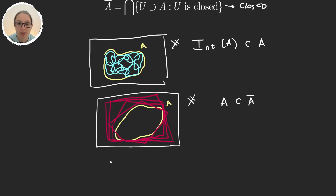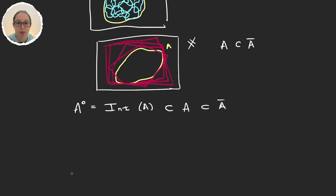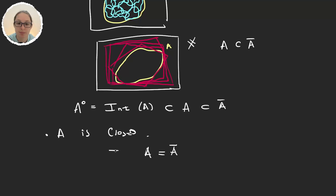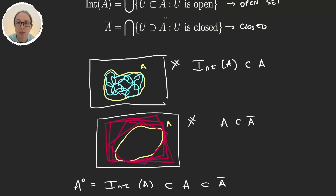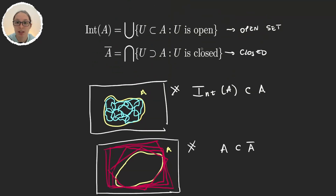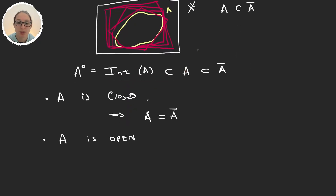So what we have is that the interior — which can also be written as A with a zero — is a subset of A, and A is a subset of the closure. When A is closed, A will be part of the intersection because it contains itself and is already a closed set, so A equals its closure. When A is open, A will be one of the open sets in the union, so A equals its interior.